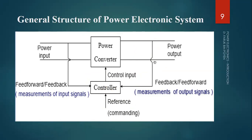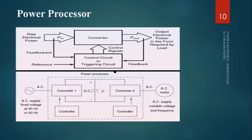Now looking at the processor diagram: we have one converter and one control circuit or triggering circuit. We will study in detail what the triggering circuit means and what different converters are available in power electronics. This is just a generalized format as part of the introduction to power electronics. Once we go into detail on each section, you will understand how power conversions take place.